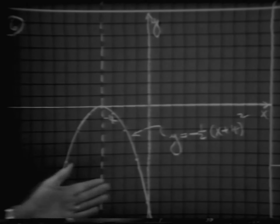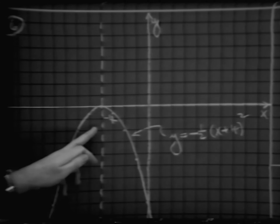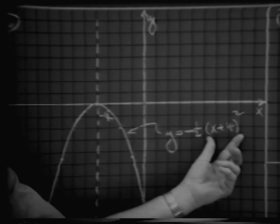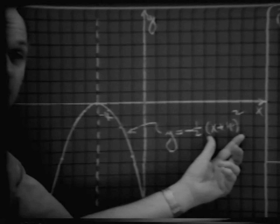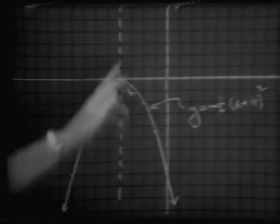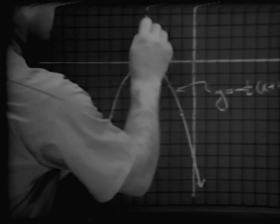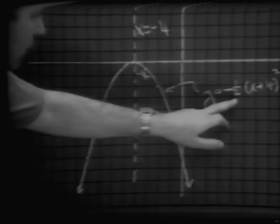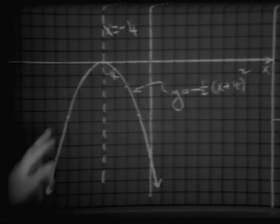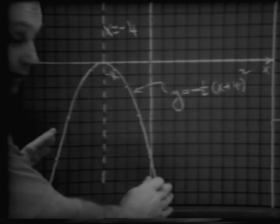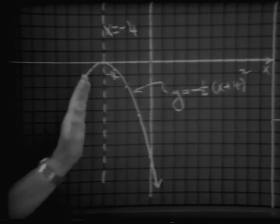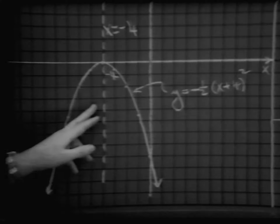Let's look at another example. Here we have a curve which is translated to the left 4 units, and notice the pattern is x plus 4, the quantity squared. If you ask what number makes x plus 4 equal to 0, that must be negative 4, giving an axis of symmetry x equals negative 4. Here the number a happens to be negative one-half, so that's going to make it concave down and spread out a little bit, and the pattern x plus 4 squared translates it to the left 4 units.